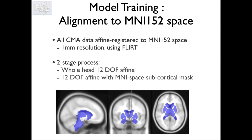We do not do a non-linear registration because one of the things we're interested in is what is the average shape of these structures and how do they vary across the population, so we must preserve the shape so that we can actually measure that variation. If we did non-linear registration we would get rid of that variation — it would be encoded in the warp fields. This is a more direct way of looking at the images and seeing what that variation in shape looks like, so we preserve it by sticking to a linear or affine registration process, even though it's a two-stage one.